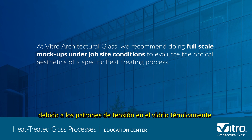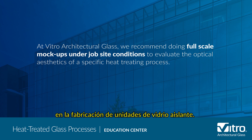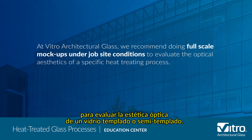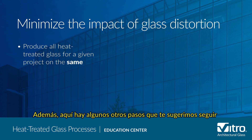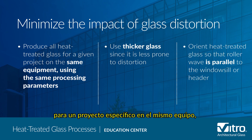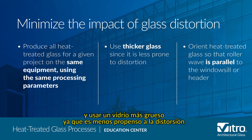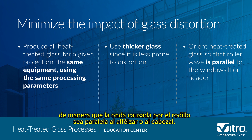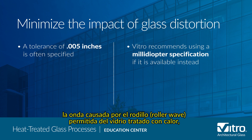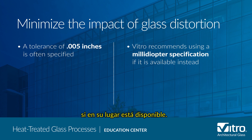Glass distortion can also occur due to strain patterns in heat treated glass or interference fringe patterns in the fabrication of insulating glass units. That's why at Vitro Architectural Glass, we recommend doing full-scale mock-ups under job site conditions to evaluate the optical aesthetics of a specific heat treating process. To minimize the potential impact of glass distortion: produce all heat treated glass for a given project on the same equipment using the same processing parameters; use thicker glass since it is less prone to distortion; orient heat treated glass so that the roller wave is parallel to the windowsill or header. While there is no industry standard to quantify permissible heat treated glass roller wave, a tolerance of five thousandths of an inch is often specified. Vitro recommends using a milli-diopter specification if it is available instead.